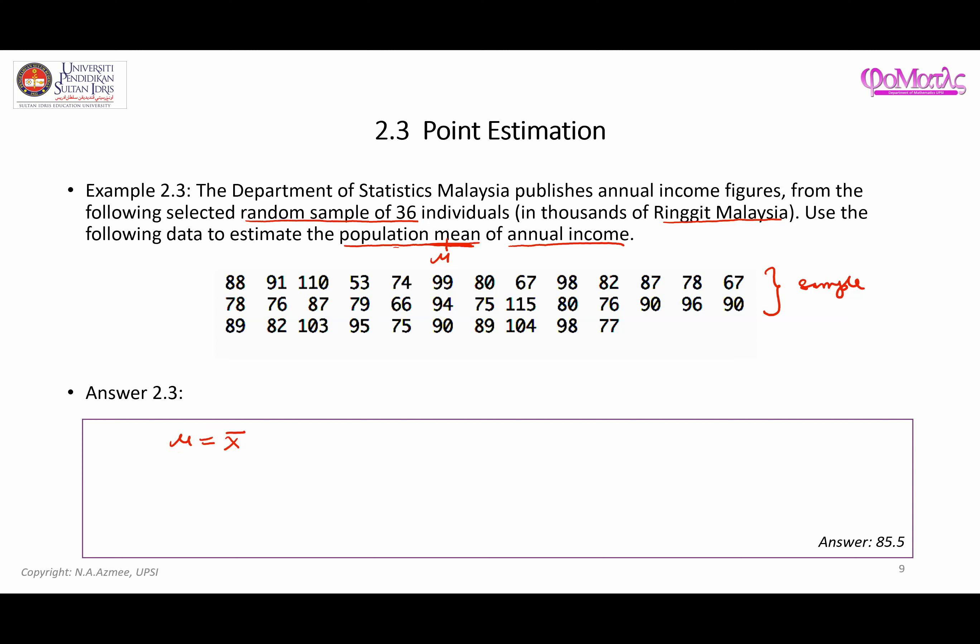Our job is to calculate x bar, and x bar is just the summation of all these data points here. So basically it's just 58 plus 91 plus 110 plus 53 and you go on to sum all the data values until the end which is 77. Since you have quite a big number of values here, what you can do is you can just use dot dot dot to represent the process of adding up all these data values.